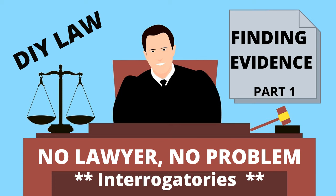For example, one interrogatory served on an opponent reads: identify all persons having firsthand knowledge of any material fact alleged in the pleadings of this case, and with regard to each such person, state what they know about each such fact and how they came to know it.